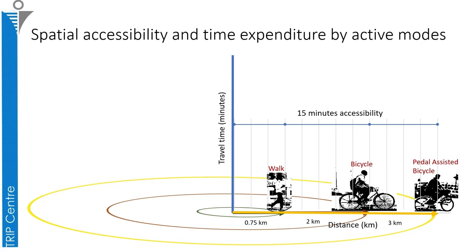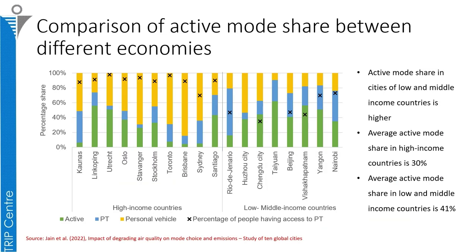Now I am going to discuss how the active mode modal share varies with respect to cities and the economy. This graph shows the comparison of modal share between different cities. On the left-hand side are cities from high-income countries, and on the right-hand side are cities from low and middle-income countries. The active modal share in low and middle-income countries is higher than the active modal share recorded in cities of high-income countries.